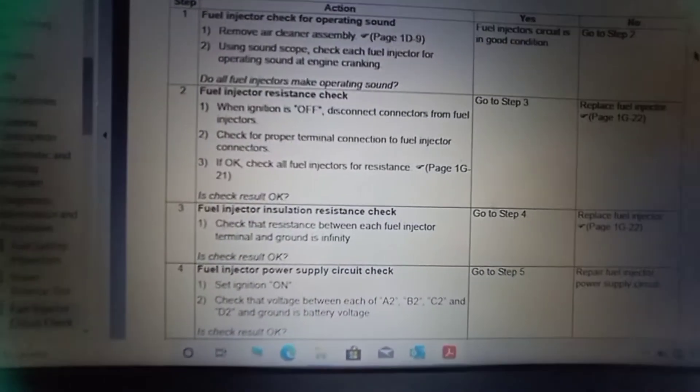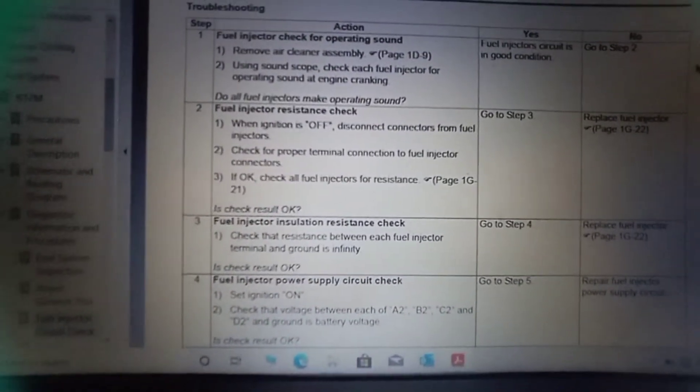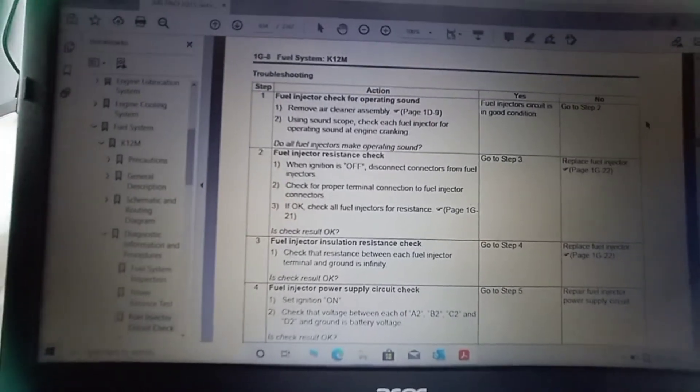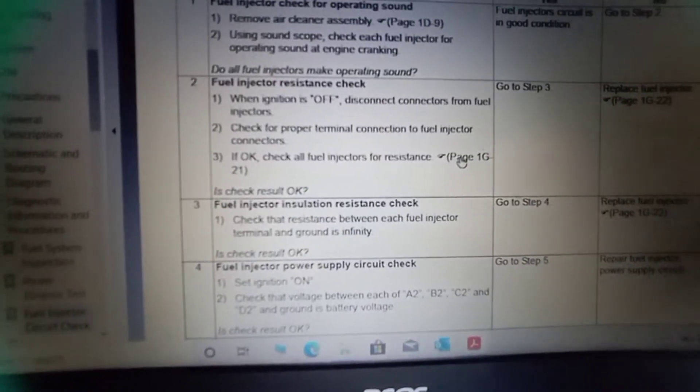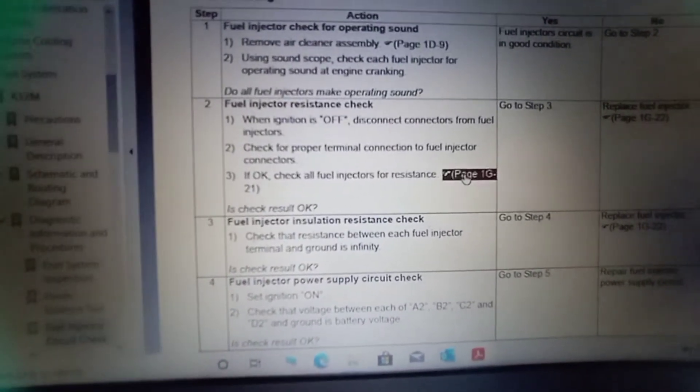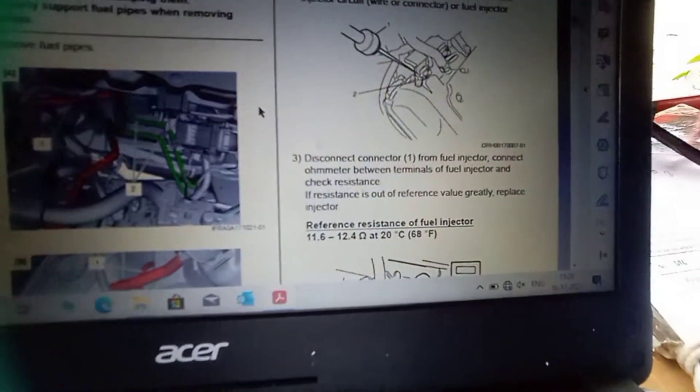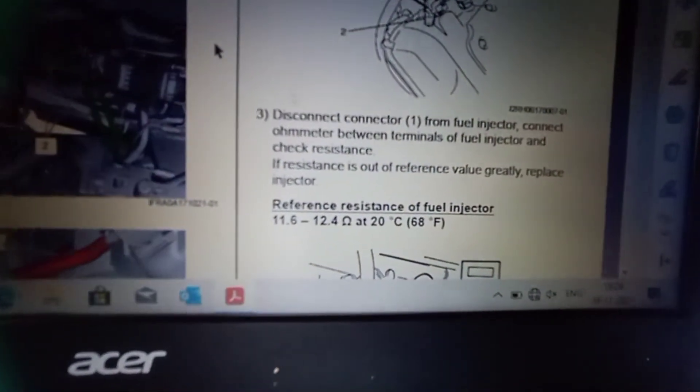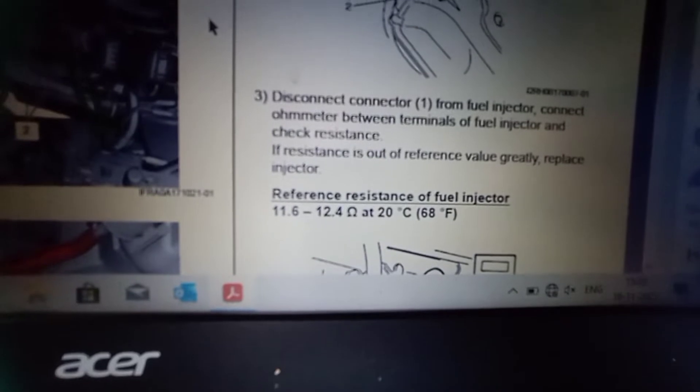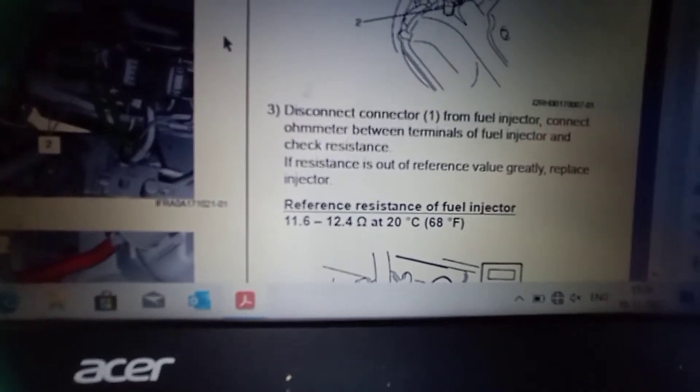Next fuel injector resistance check. We are going to page number 1G21. Fuel injector resistance 11.62 to 12.4 ohm at 20 degrees Celsius.